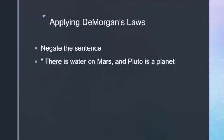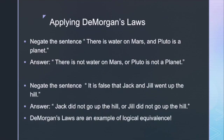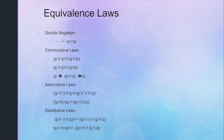Let's apply DeMorgan's laws to negate this sentence: 'There is water on Mars and Pluto is a planet.' When we negate it, we get: 'There is not water on Mars or Pluto is not a planet' — the and becomes an or. Another example: 'It is false that Jack and Jill went up the hill' is the negation of P and Q, giving us 'Jack did not go up the hill or Jill did not go up the hill.' DeMorgan's laws are an example of logical equivalence. There are many equivalence laws which we will prove later in the logic section using truth tables — the full list is posted on Canvas.